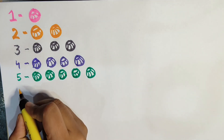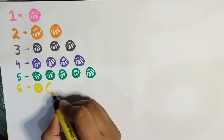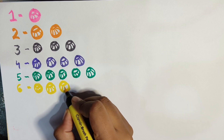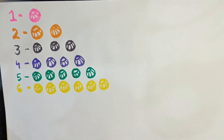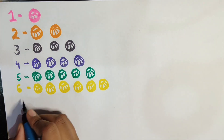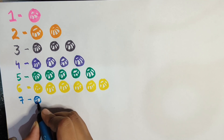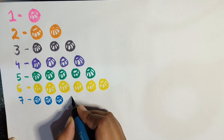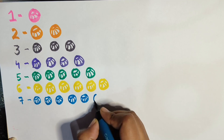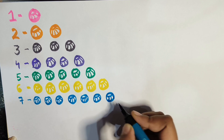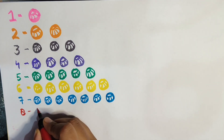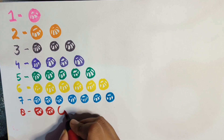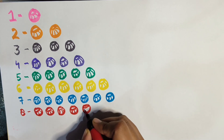1, 2, 3, 4, 5, 6. In front of 6, how many balls? 6 balls. So 1, 2, 3, 4, 5, 6. In front of 6, okay.